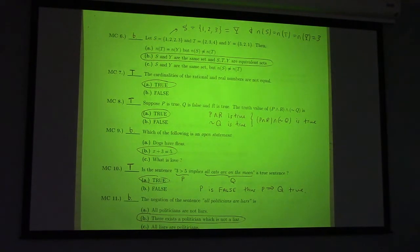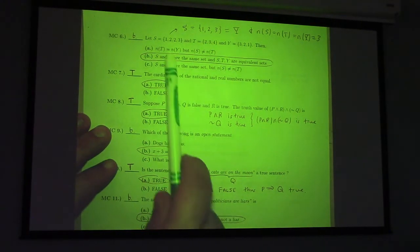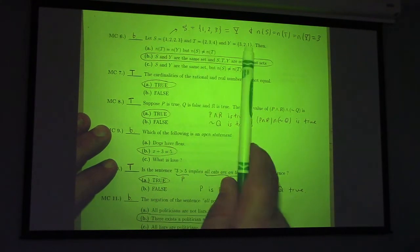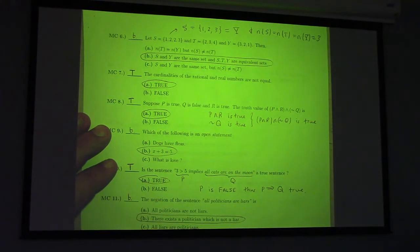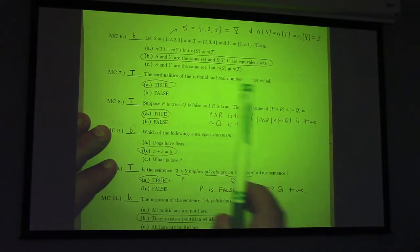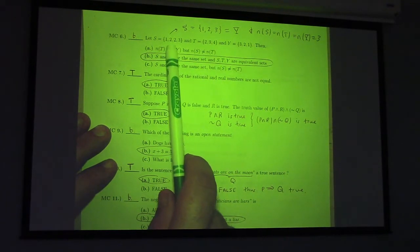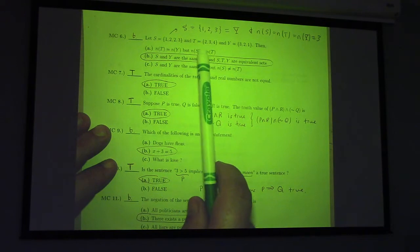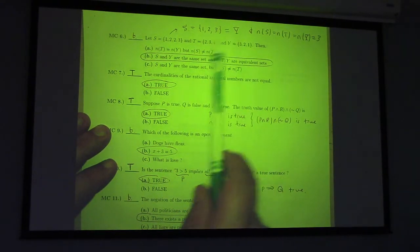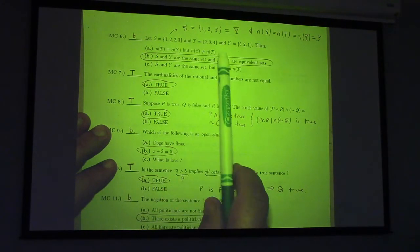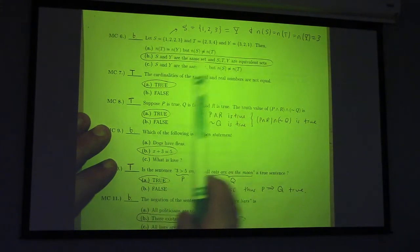All right. So, this, I think, is the version you don't have, right? So, we have three sets here, S, T, and Y, and we're asked some questions about them, basically. So, the point here is that both S and Y just contain the elements one, two, and three. So, in fact, S and Y are the same set.